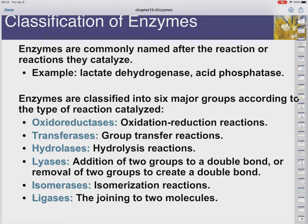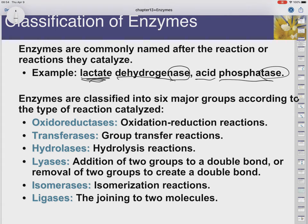Enzymes can be classified a couple of different ways. They're often commonly named based on the reaction they do or the molecule that they catalyze the reaction for. So like lactate dehydrogenase — lactate is the molecule that it's going to act on, and dehydrogenase means it's going to remove some hydrogens. Acid phosphatase is going to add phosphoric acid. These enzymes usually end in the -ase suffix — that's how you know it's an enzyme. For example, amylase goes and catalyzes the hydrolysis of amylose.